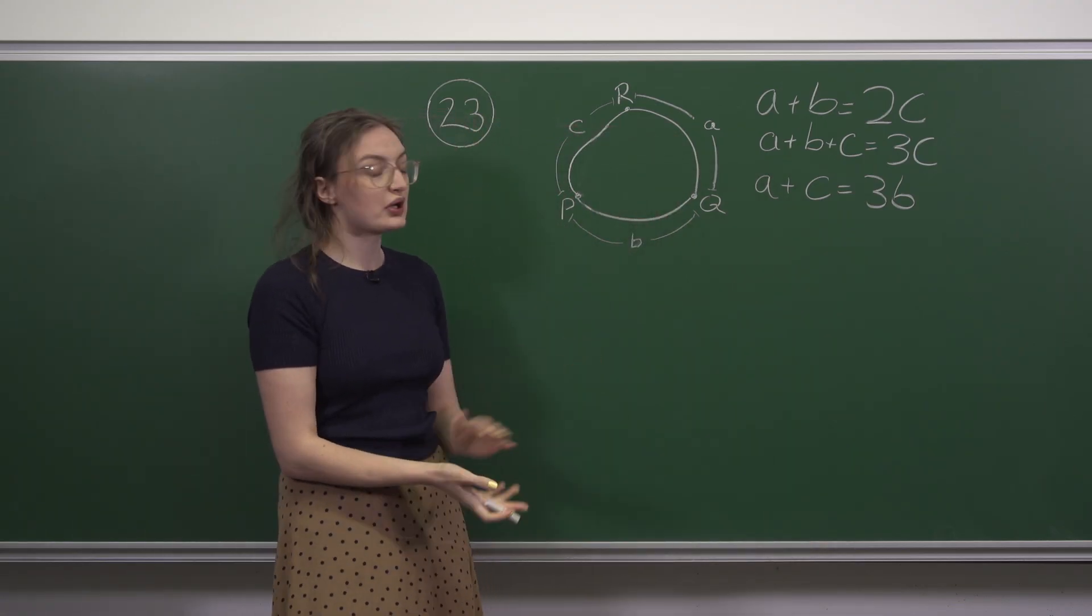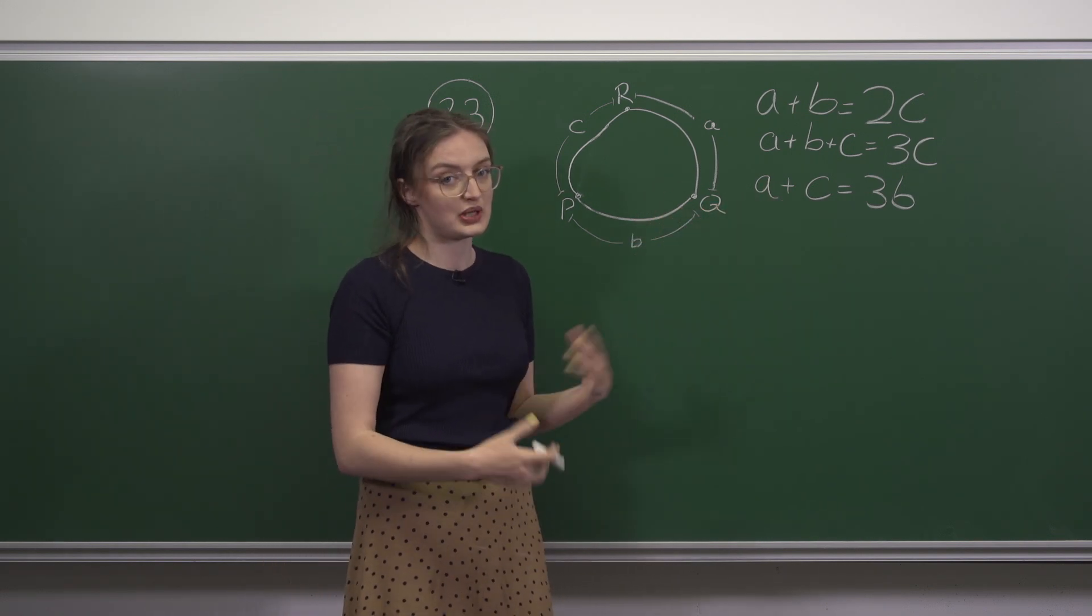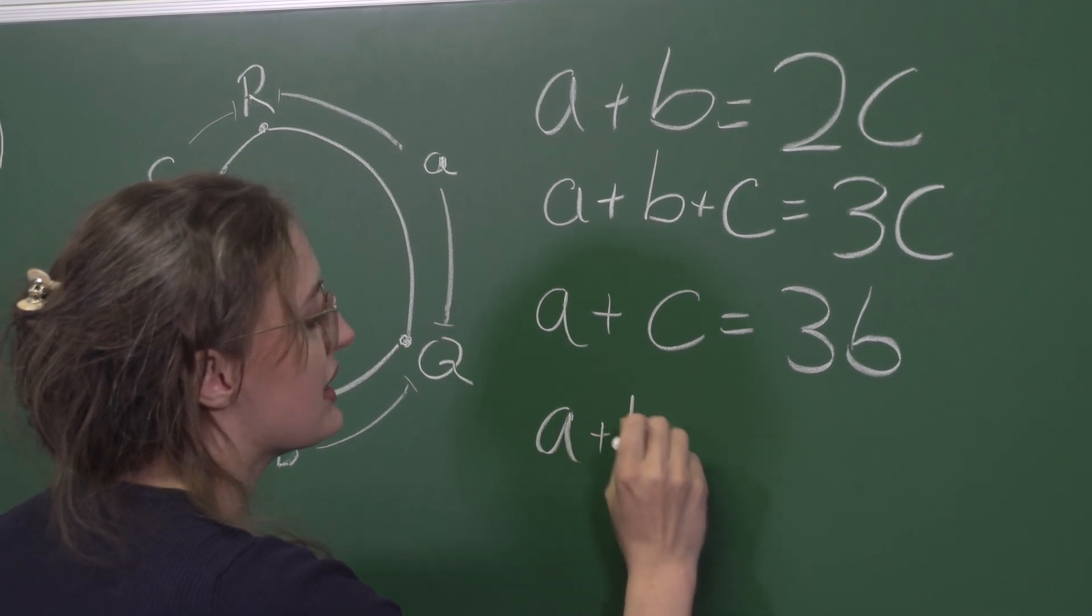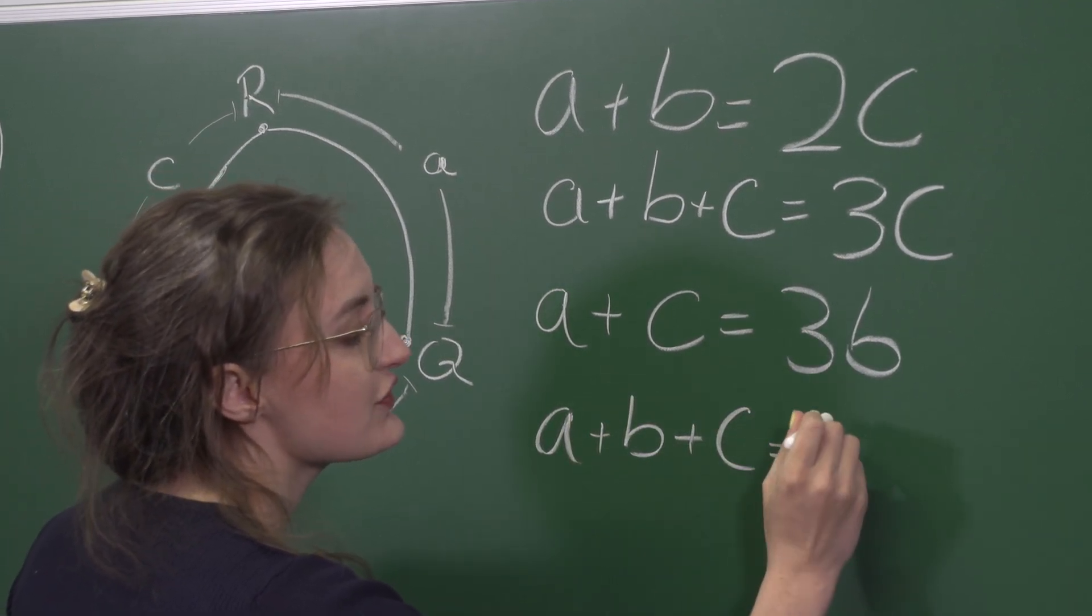For the second one we need an extra B on this side so we add it to both sides. We get that A plus B plus C is 4B.